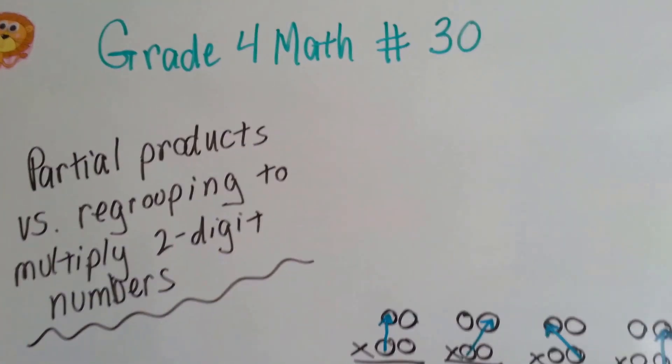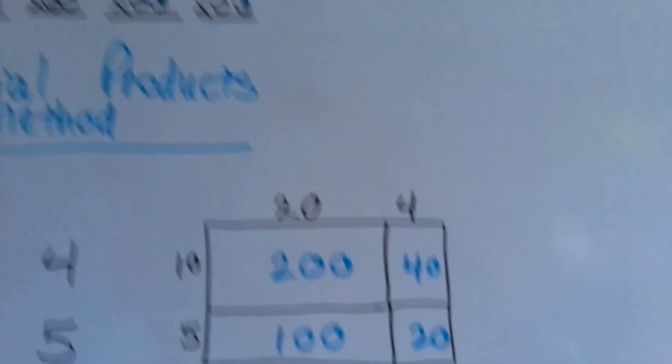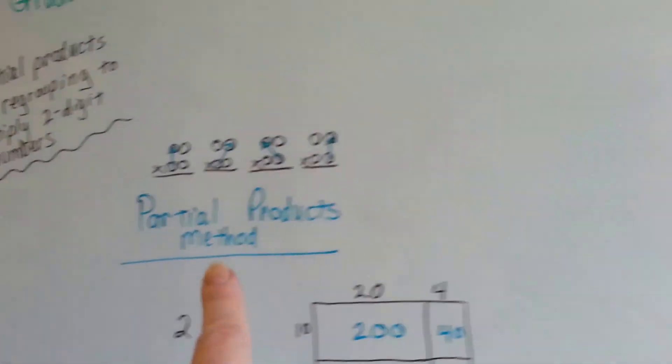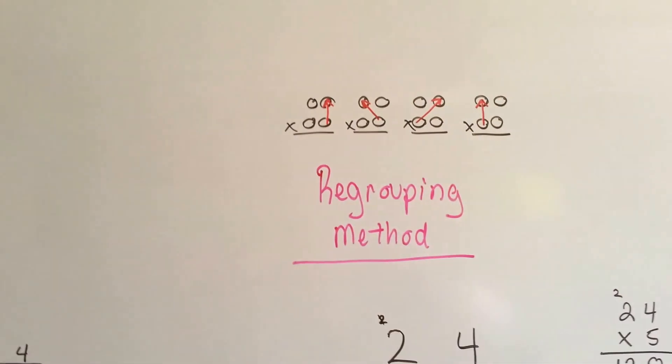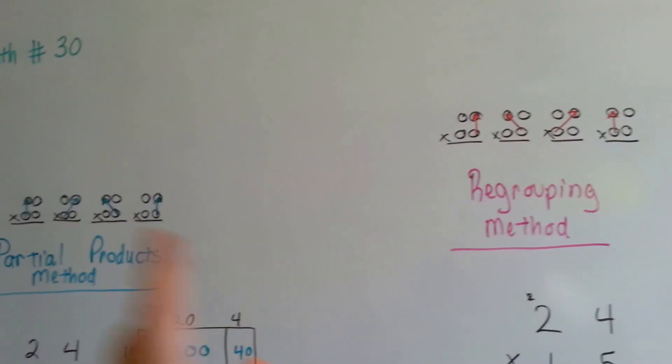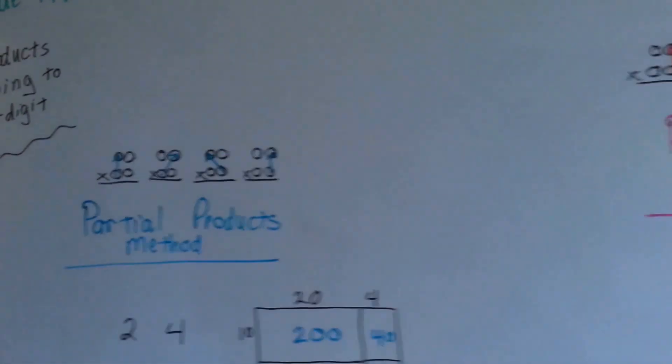Over the last couple of videos, we've been talking about multiplying two-digit numbers, and I'm going to show you a direct comparison between the partial products method and the regrouping method, because this one is this one backwards, and I'll show you how that can be.